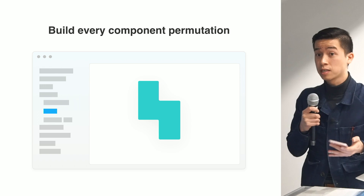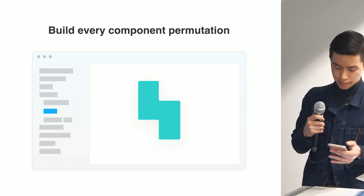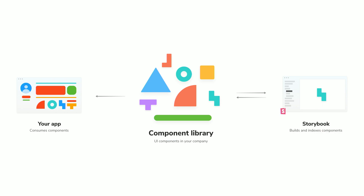If you're working on an app like Facebook, Airbnb, Dropbox, or GitHub, you actually want this. Here you can see the relationship between your app, your component library, and Storybook. Your app consumes components, your component library is where they all live, and Storybook is responsible for building and indexing them.